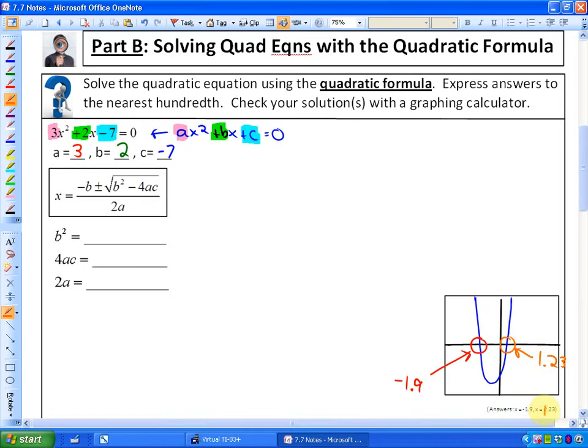Now let's see how we can get the same answers with our quadratic formula. The first thing you'll notice is there's three products. I'd like to calculate those first: b squared, 4ac, and 2a.